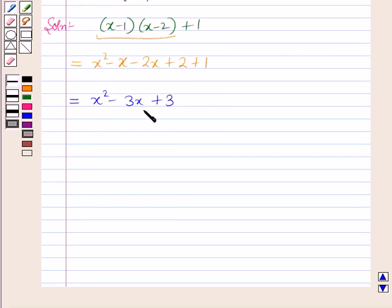Now by the method of completing the squares, we will complete the square of this expression. For this we will add and subtract the square of half the coefficient of x. That will be equal to x² - 3x + 3, and here half the coefficient of x is 3/2, and its square is 9/4, so it will be plus 9/4 minus 9/4.